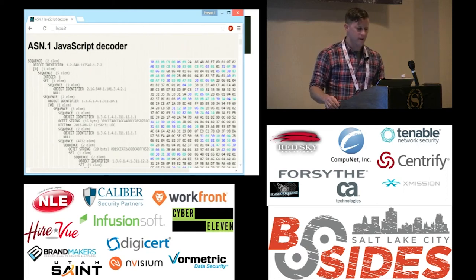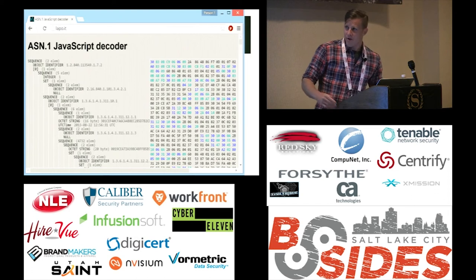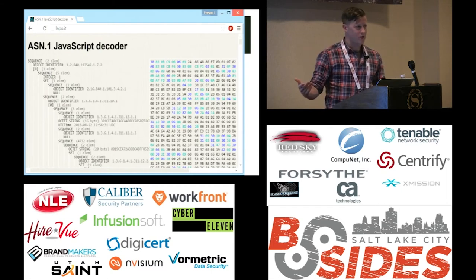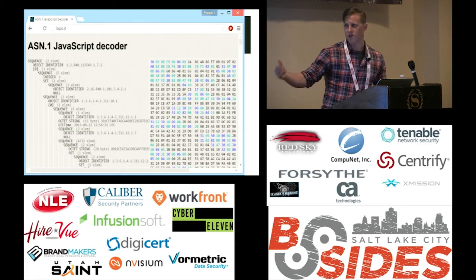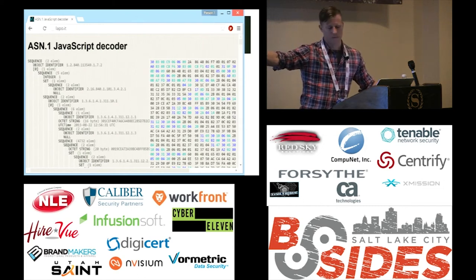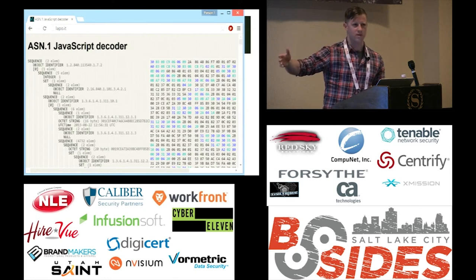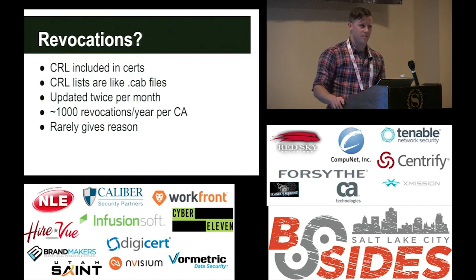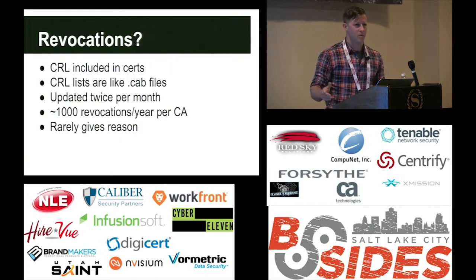If you go to lapo.it, it's a web app where you can drag and drop a catalog file or any type of certificate and it will do the ASN.1 parsing. You can see on the left the parsed structure: sequences, integers, object IDs specifying what information comes next. On the right you have a hex dump of that information. It's a pretty useful tool to understand the ASN.1 format better.